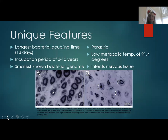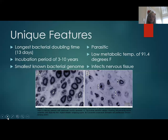M. leprae has several features that are unique. It takes 13 days to divide, which is the longest known doubling time of all bacteria. This is one feature that makes it especially difficult to culture artificially in lab media. Researchers couldn't grow it in a lab until the late 1980s and still have not cultured it in vitro. The long dividing time and covalent bonding of the cell membrane also makes leprosy difficult to treat.